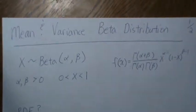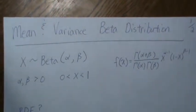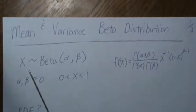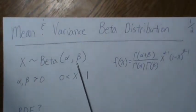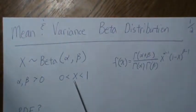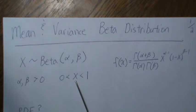Hello, in this video we're going to calculate the mean and the variance of a beta distribution. We represent that as X is a beta with parameters alpha and beta, where alpha and beta are positive.